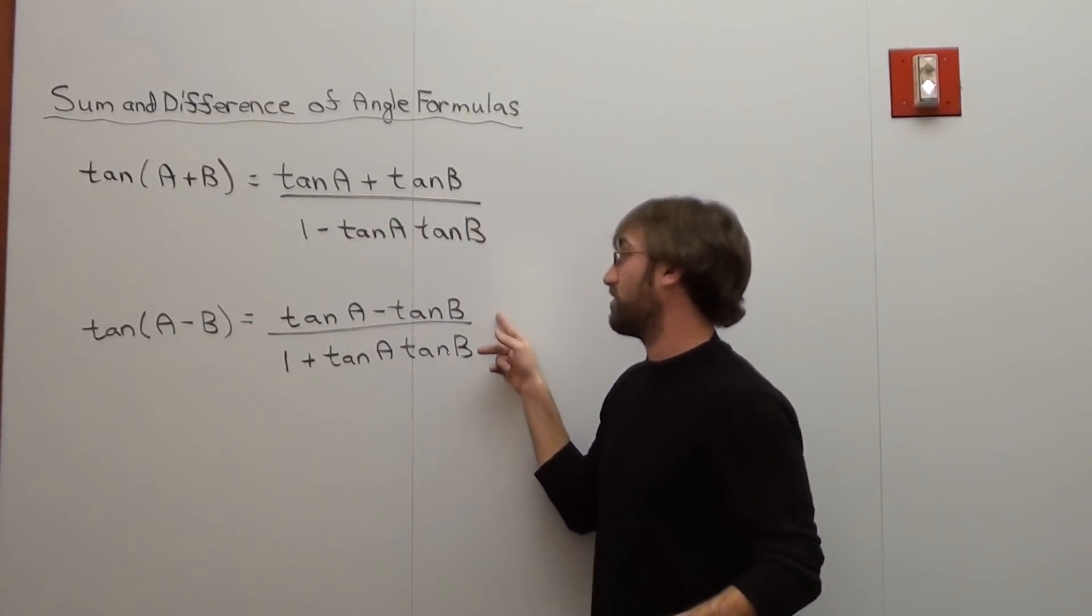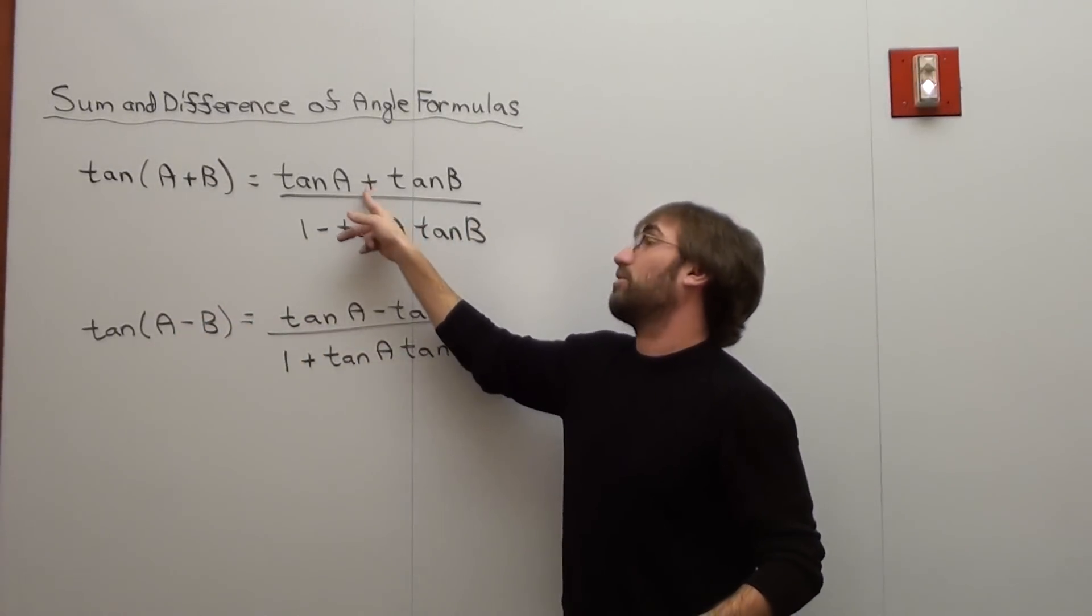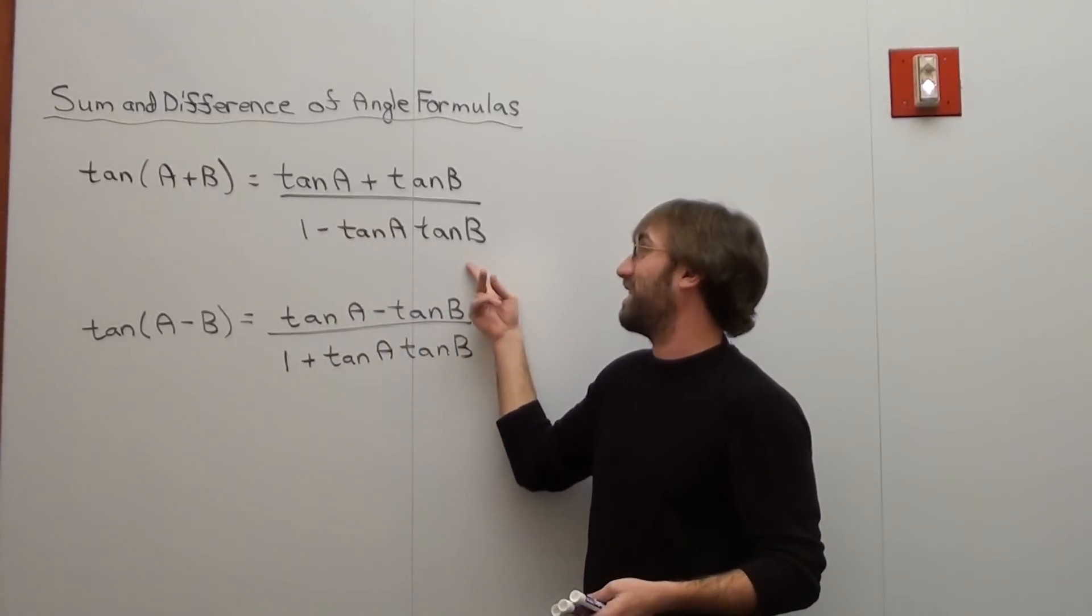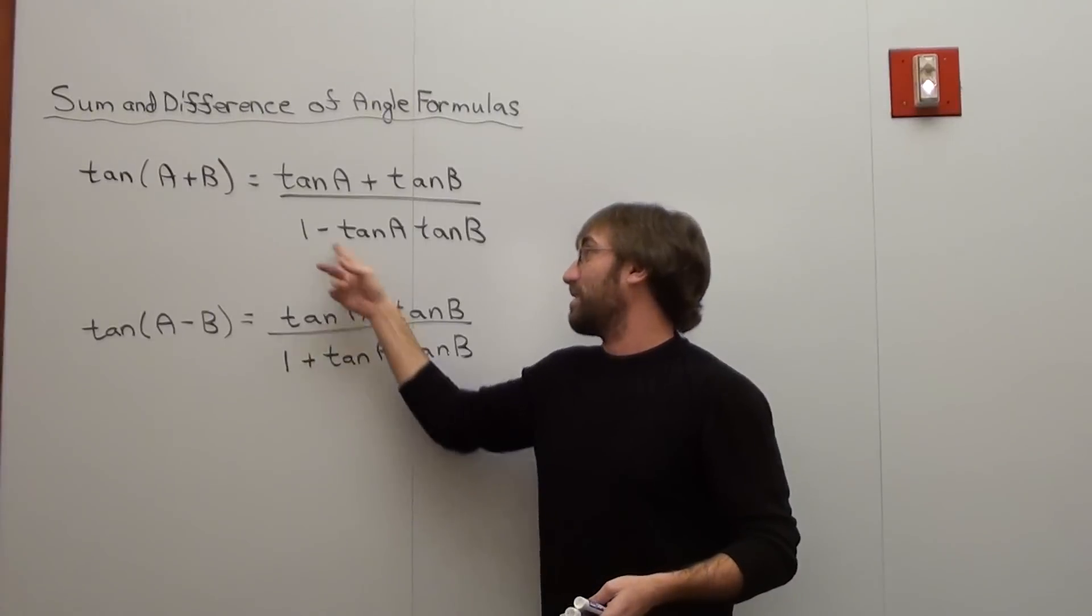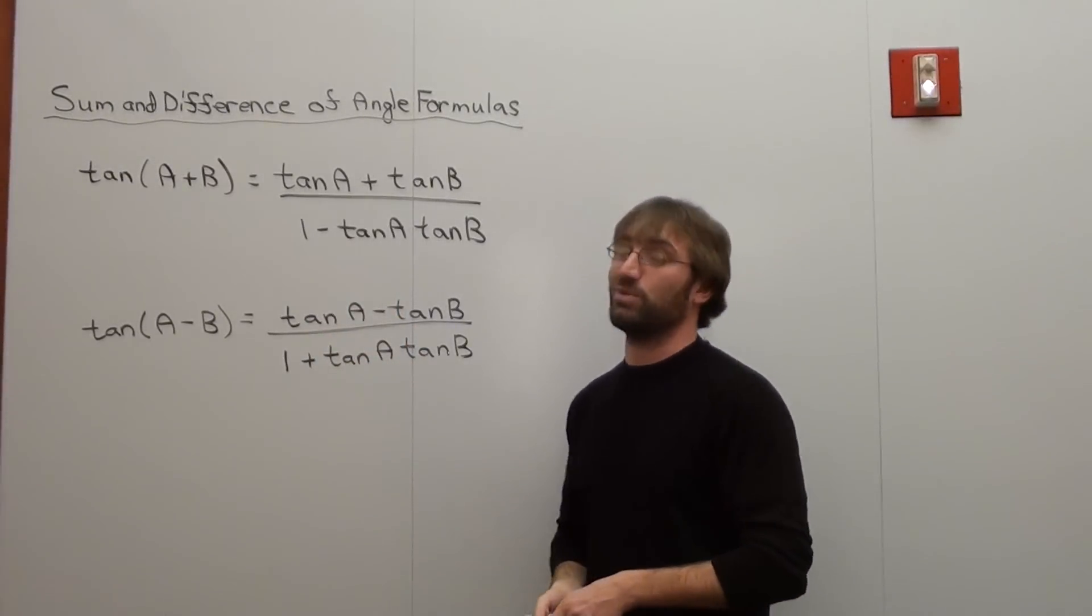This one's tangent of A minus tangent of B, and then this is one subtracted by—that was an addition, so that's a subtraction—tangent A tangent B. One plus, because that was a subtraction, that's an addition, but that's still tangent A tangent B.